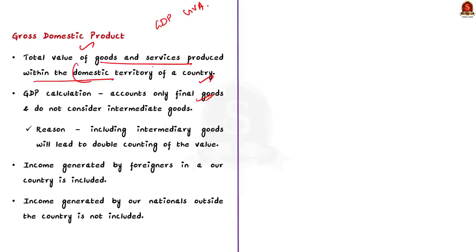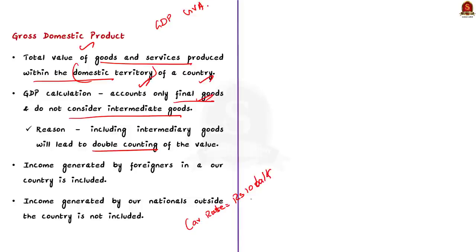During GDP calculation we only take into account the final goods and we don't consider intermediate goods. This is because if we include intermediaries it will lead to double counting. For example, to manufacture a car we need intermediary goods like engines and electrical components. Once the car is manufactured, its final value includes all these components.